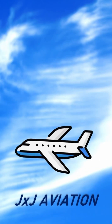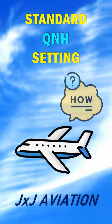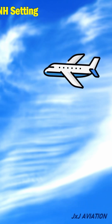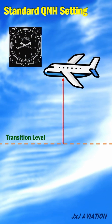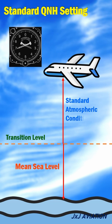Hi. In this video, we will look at what is standard QNH setting, how it is derived, and why is it used. All aircraft flying above the transition level should have the standard QNH setting on the altimeter. In this setting, the altimeter gives the airplane's altitude above the mean sea level under standard atmospheric conditions.